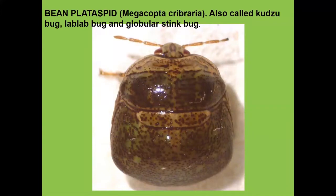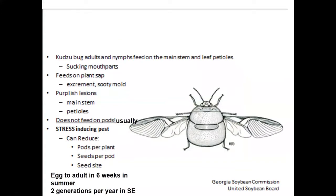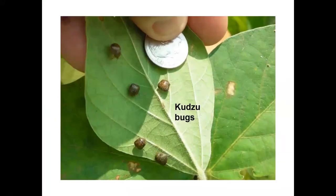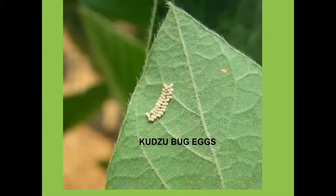Kudzu bug is now about the fifth year we've had this pest across the state. It has not been an extremely serious pest during the last two years because of the Beauveria fungus and parasitic wasps that have reduced the populations. Initially we thought this was going to be a very serious pest as they would cover the main stem of seedling soybeans early in the growing season. They reduced the number of pods per plant, seeds per pod, and seed size, and reduced yields about 20% in studies at Prattville Station for two years in a row. The immature stage is flat-bodied and hairy. The eggs are laid in two rows, and parasitic wasps will lay their egg inside the kudzu bug egg, killing the immature as it tries to develop.